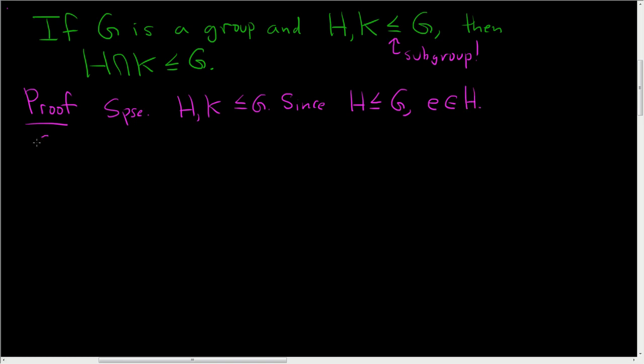Likewise, since K is a subgroup of G, we have E in K. So E, well, it's in H, it's in K, so it must be in the intersection. The intersection is what they have in common. This means that H intersection K is not empty. We are 33% done.